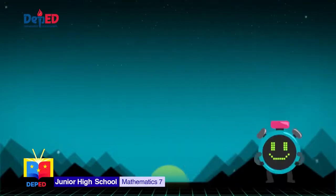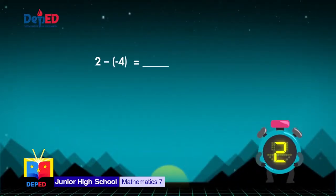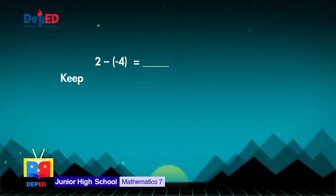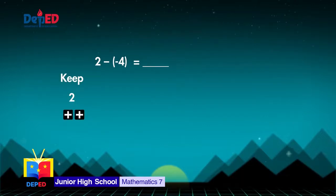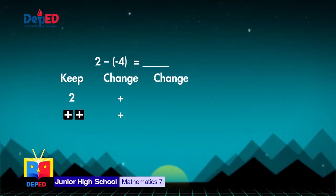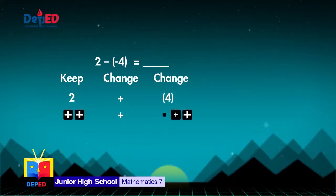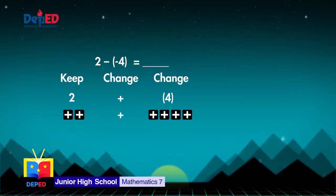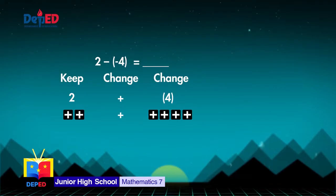Number 3: 2 minus negative 4. Keep the first integer, that is 2. Change the operation to plus. Then change the sign of the second integer, so that is positive 4. Follow the rules for addition. Since they have like signs, add the integers, then keep the sign. So 2 plus 4 is equal to 6.